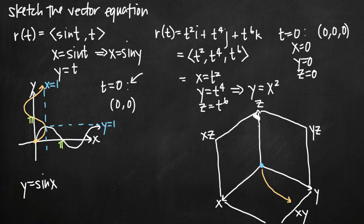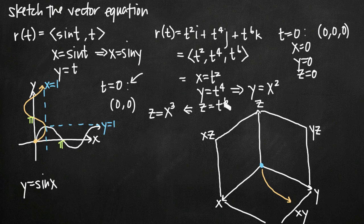For the shadow in the x,z coordinate plane, I need z in terms of x. Since x equals t squared, z equals x cubed — because t squared raised to the third gives t to the sixth, which matches z equals t to the sixth. So z equals x cubed is the projection in the x,z coordinate plane. That's a slightly steeper curve than y equals x squared, and I can graph it going up in that plane.